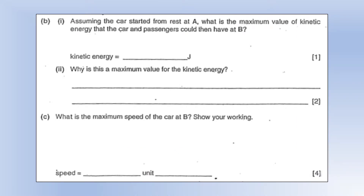Assuming the car started from rest at A, what's the maximum value of kinetic energy the car and the passengers could then have at B? The maximum is 70,000 joules — all the GPE lost is turned into kinetic energy. That would be the maximum.